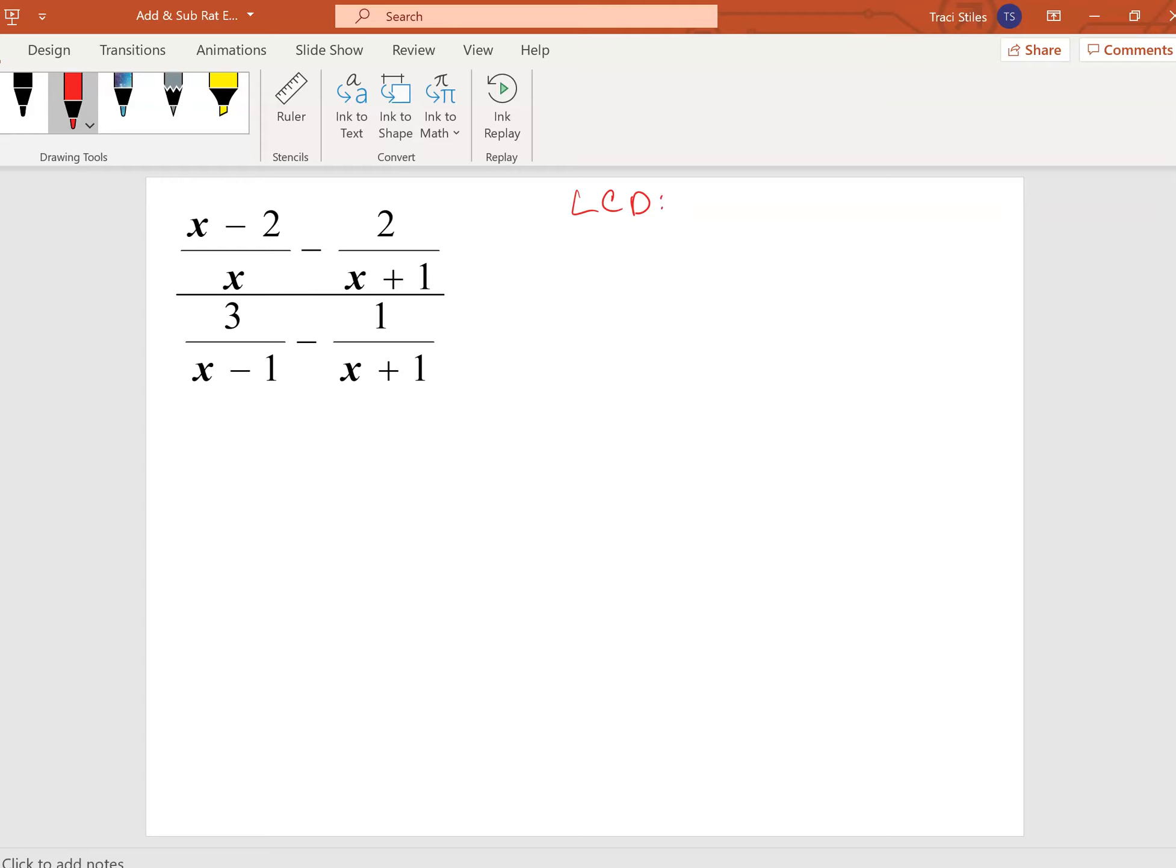So your least common denominator, we've got an x, we've got x plus 1, and we've got x minus 1. So your least common denominator is going to consist of those three things.